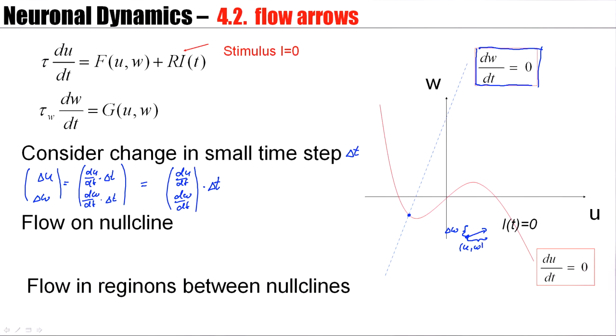Now there's something interesting happening on the nullclines. On the nullcline, on the u nullcline, I know that du/dt is zero. But that means that the change in the u direction, du/dt is zero, delta u is zero. If delta u is zero, then arrows, the flow arrows, must be vertical. At this point, I don't know yet whether they would be vertically upward or vertically downward.